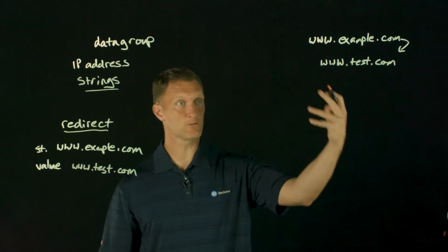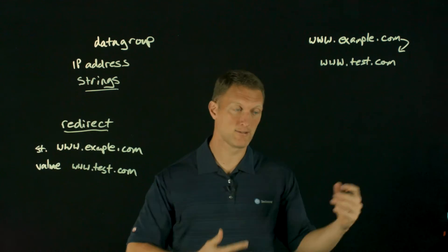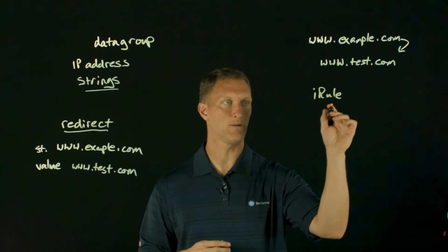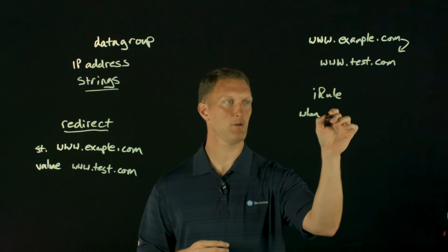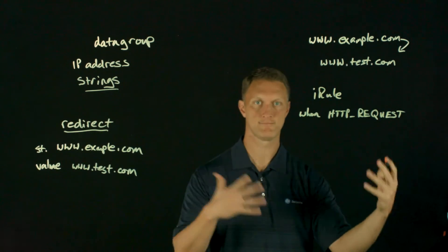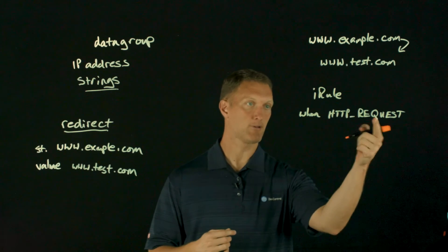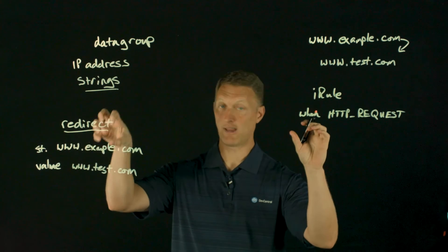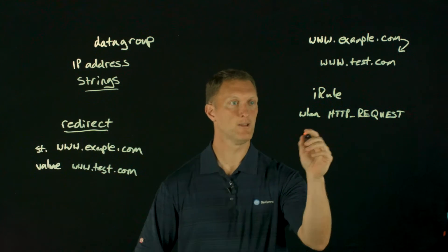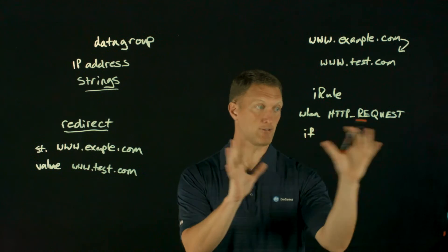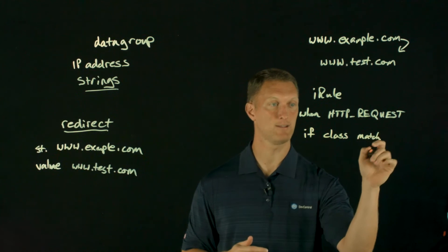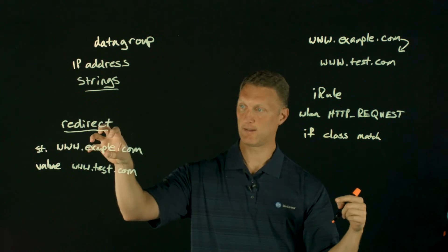So now you have your data group all built out, called 'redirect.' How do you make it all work? On your virtual server, you're going to create an iRule. The iRule is going to be based on when HTTP_REQUEST — because iRules are event-driven. So when an HTTP request happens, you are going to interrogate this data group using an if statement. There's a class command and a match command — so you're going to say 'class match' — and what this basically does is match against the contents of the data group.